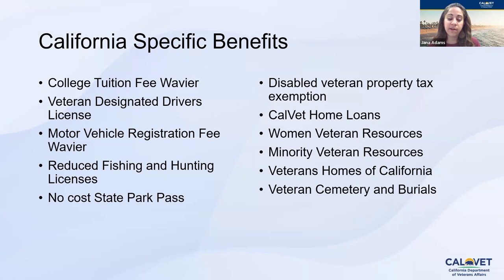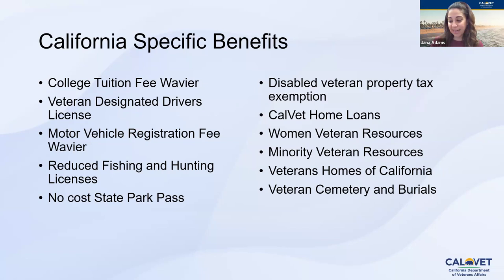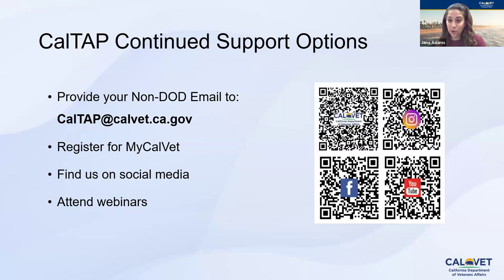There are lots of ways to stay connected with CalVet. Feel free to email us at caltap@calvet.ca.gov — someone checks it every day, usually on the hour, so we respond quickly. If we don't know the answer to your question, we'll either figure it out or direct you to the right place.